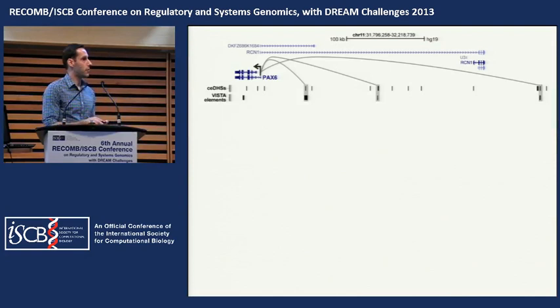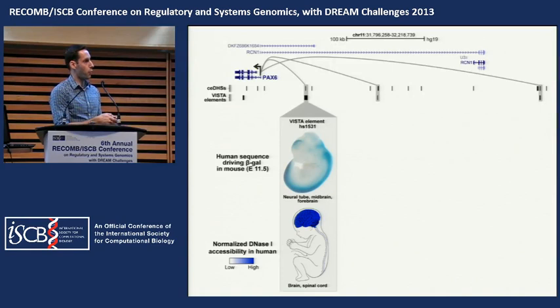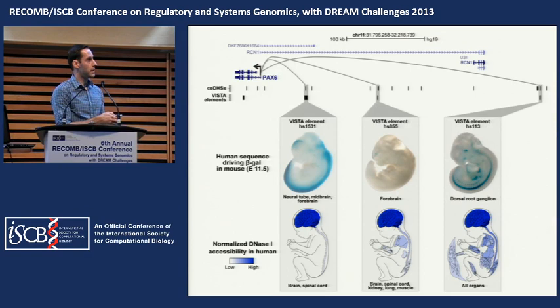For a gene-centric view, here I'm showing PAX6, involved in neurogenesis and oculogenesis. In the first track I show our enhancer predictions for this gene, and in the lower track the VISTA elements nearby, about 400 KB upstream of the gene. The first element, when put into a mouse reporter plasmid, drives beta-gal expression in the neural tube, hindbrain, and forebrain — and the DHS contained within it is highly active in human fetal brain and spinal cord. Similarly, two other DHSs overlapping VISTA elements drive expression in neural tissue in mice and are highly active in neural tissue in the fetus.